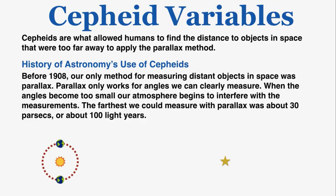The reason we care about Cepheid variables so much is that they allowed humans to find the exact distance to objects in space that were too far away for the parallax method. Before 1908, our only method for measuring distant objects in space was parallax, which only works for angles we can clearly measure. When angles become too small, our atmosphere interferes with measurements, so the farthest we could measure with parallax was about 30 parsecs, or about 100 light-years.